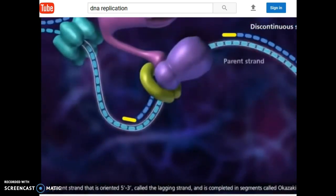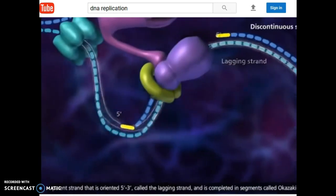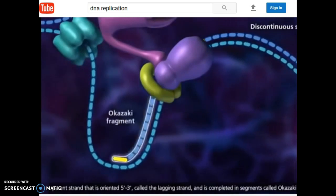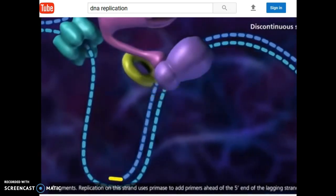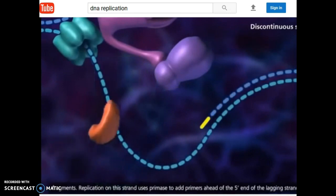Discontinuous synthesis occurs on the parent strand that is oriented five prime to three prime, called the lagging strand, and is completed in segments called Okazaki fragments. Replication on this strand uses primase to add primers ahead of the five prime end of the lagging strand.